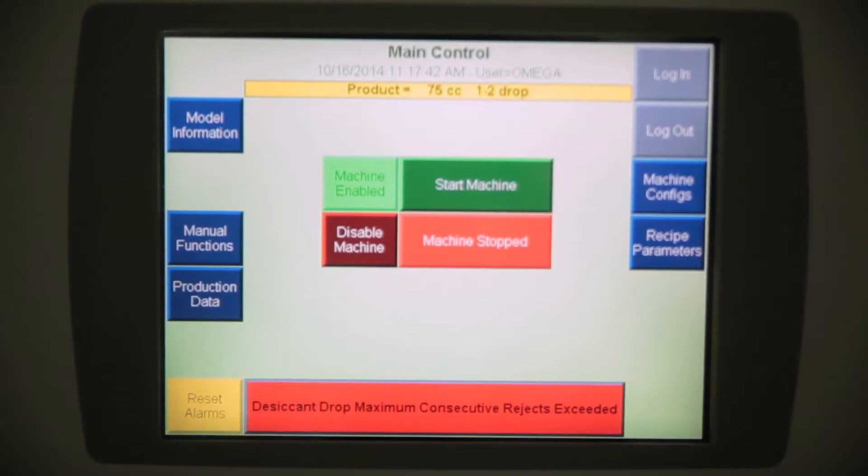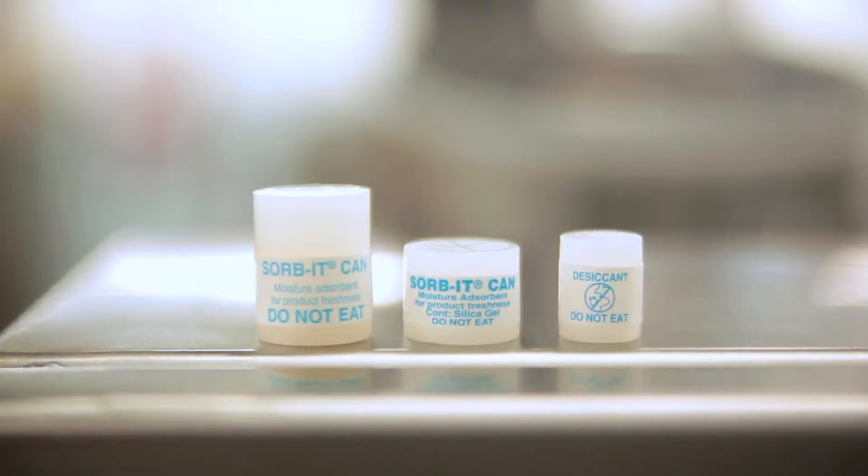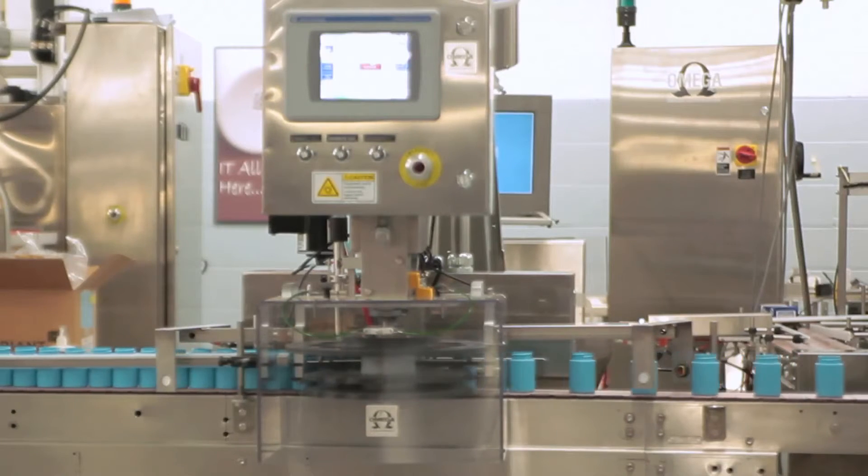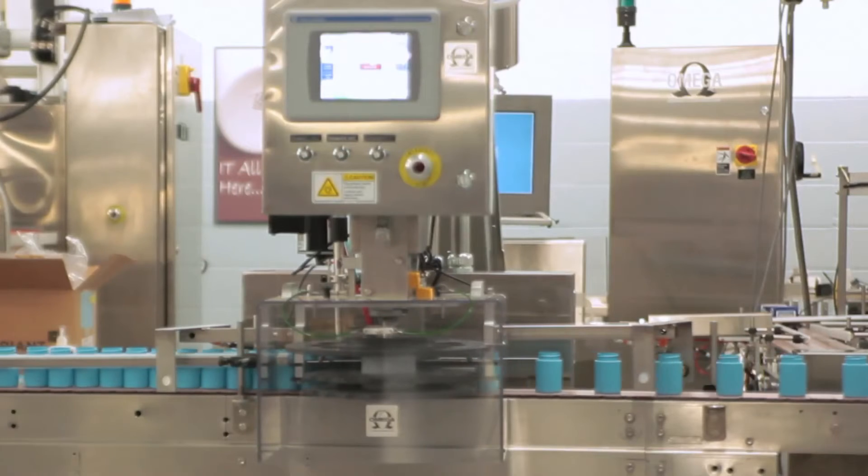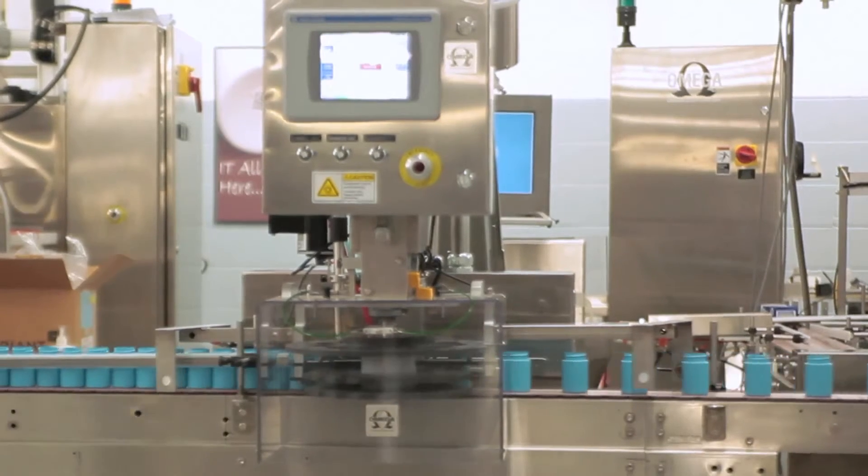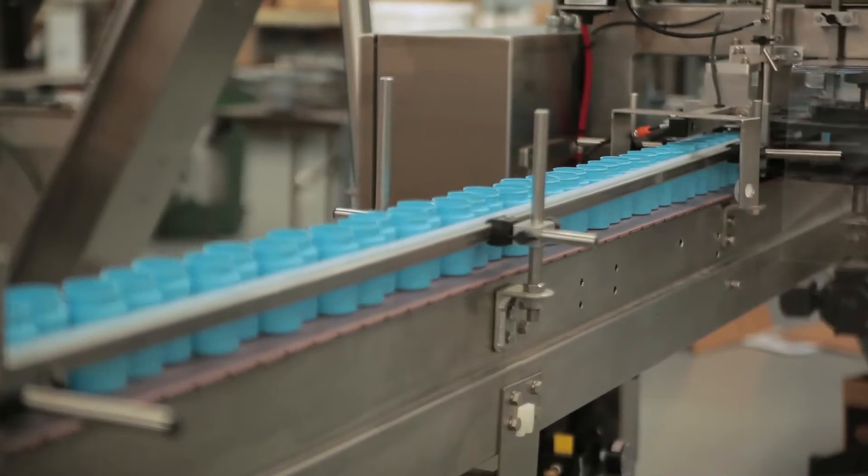Canister feeders from Omega Design Corporation are designed to accommodate a range of canister sizes with the ability to dispense single or multiple canisters per bottle at high rates of speed ranging from 50 to 600 per minute.